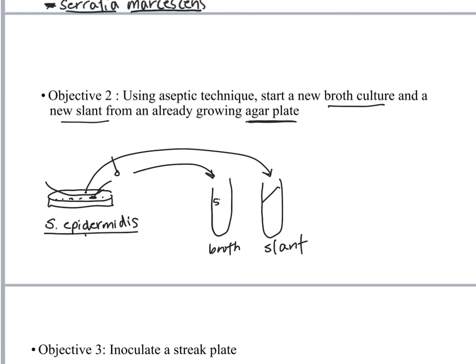We're going to do the same exact thing. We're going to start a new broth culture and a new slant. But this time, we're going to inoculate from some solid media. You will have a stock plate of Staphylococcus epidermidis. That's an organism I think we use in every lab. It's part of your normal microbiota on your skin. Totally harmless when it's on our skin, so we use that an awful lot.